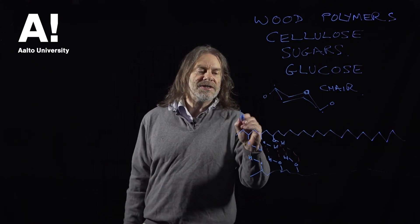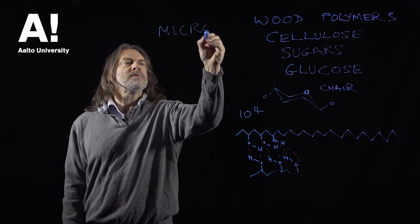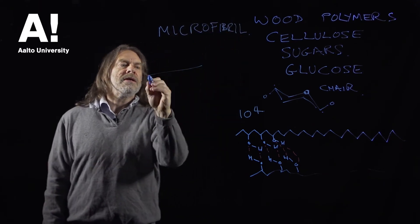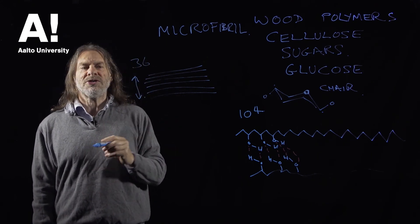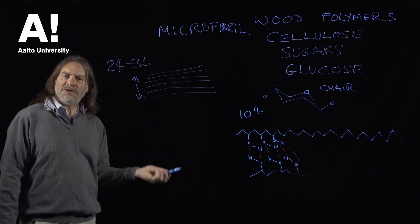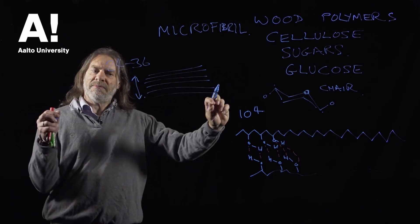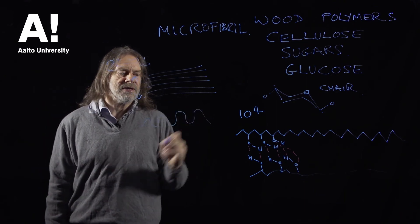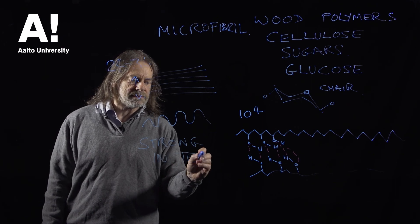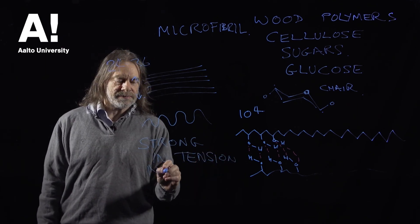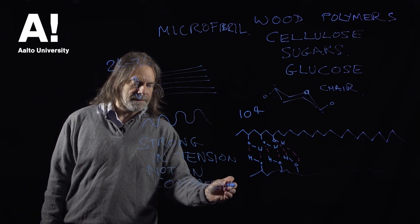We don't really know the exact length, but it's at least 10,000 glucose molecules. These chains join together to form something called a microfibril, and the number of cellulose chains that makes a microfibril is something like 24 to 36. So 24 to 36 cellulose chains go to make a microfibril, which is very long and very, very stiff if you stretch it. But if you try pushing it, it will crumple up just like a thread of cotton — strong in tension, but not strong in compression. And that's the microfibril.